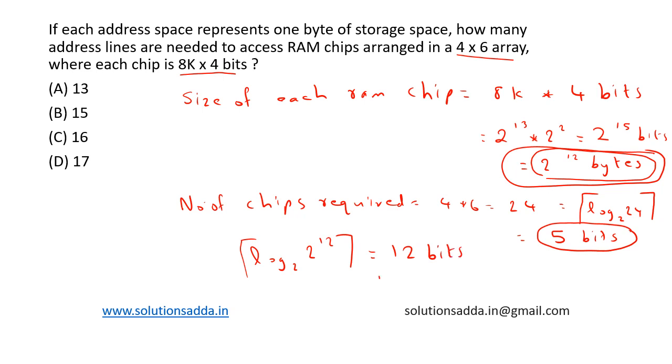So, in total, we require 12 plus 5 which is equal to 17 bits. So, based on the options, option D is the right answer.